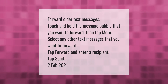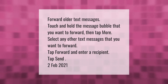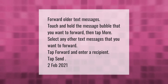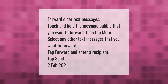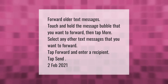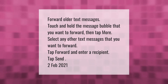To forward older text messages, touch and hold the message bubble that you want to forward, then tap More. Select any other text messages that you want to forward, tap Forward, and enter a recipient, then tap Send.